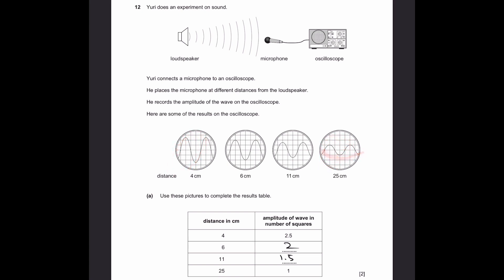The middle line is here. One amplitude is the height of the wave from the middle line to its peak. Using similar ideas, this is the middle line here of the wave. From a point on the middle line to the top is 2 squares for 6 cm. For 11 cm, from the middle line to the peak it is 1.5 squares.